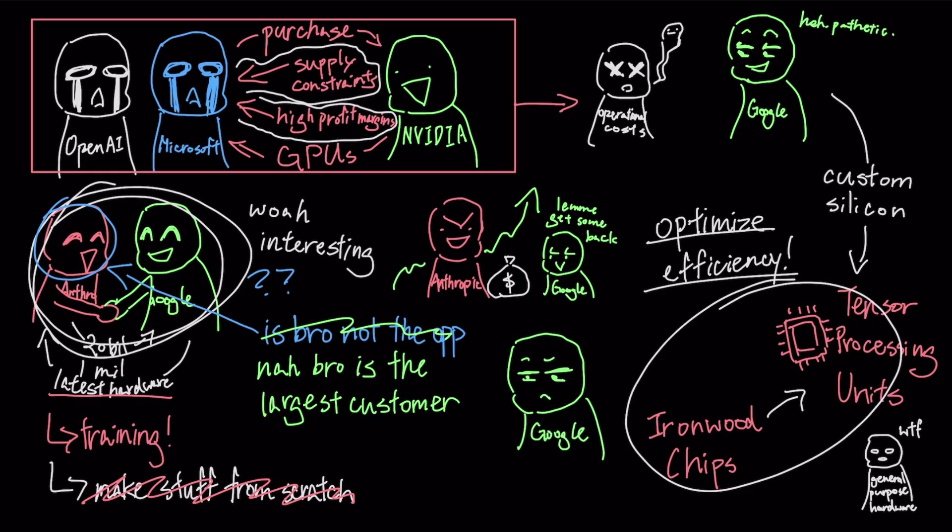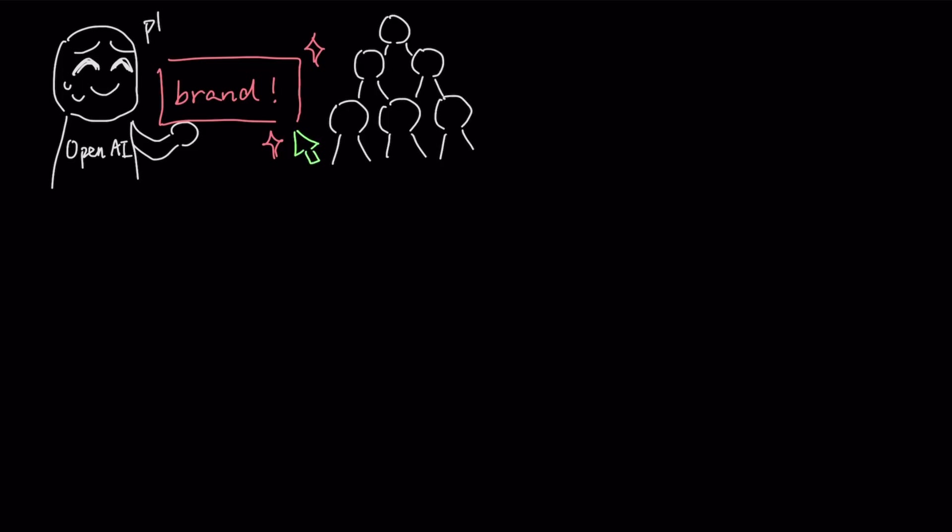Now, the question is, can they dominate the distribution network as well and ultimately win the war for consumer attention? If you look at a company like OpenAI, they have done an incredible job building a brand, but they still rely on users making a conscious decision to visit a website or download a specific application to use their product.